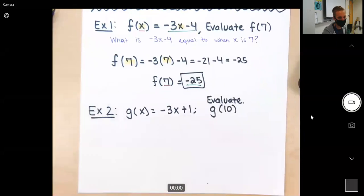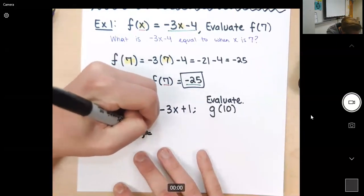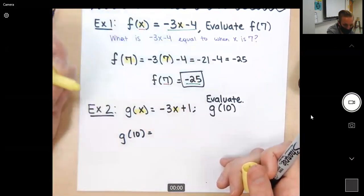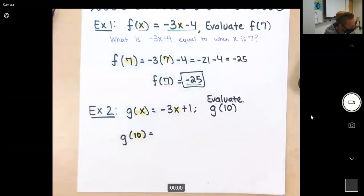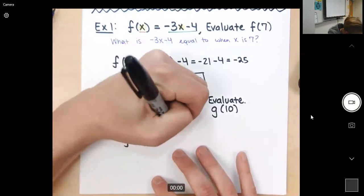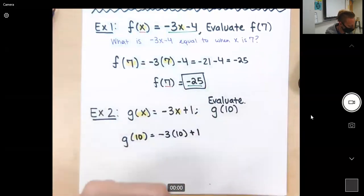g(x) equals negative 3x plus 1. Same deal. Evaluate g(10). So I'm going to write g(10). So I'm going to highlight x up here. Everywhere I see a highlighter mark instead of x, I'm going to put 10 instead. So negative 3 times 10 plus 1. That's all we have to do.